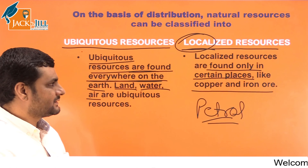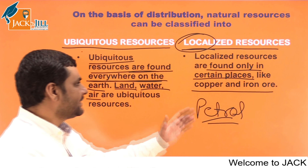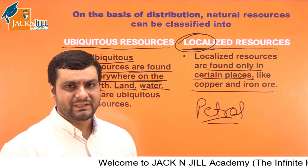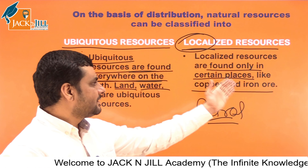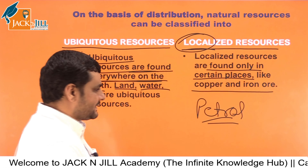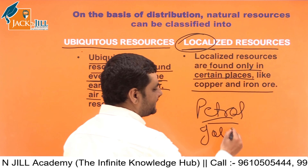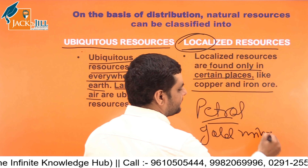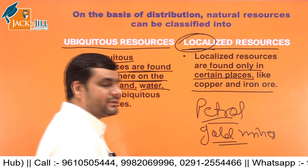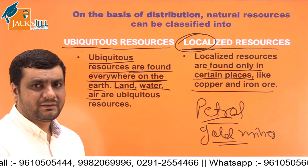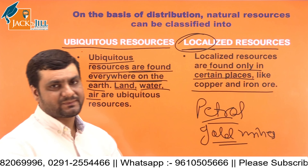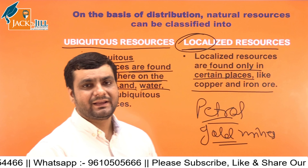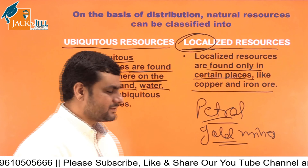Localized resources are found only in certain places. For example, copper and iron are not available everywhere — there are copper mines, iron mines, and gold mines found only in particular places. These are called localized resources.